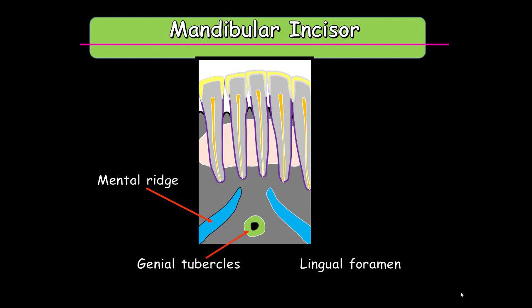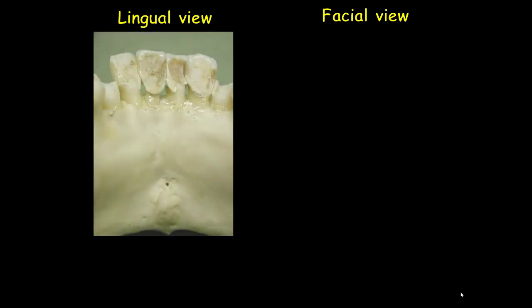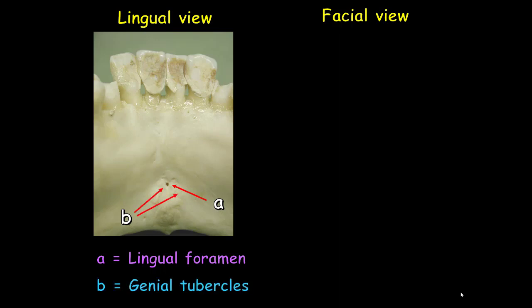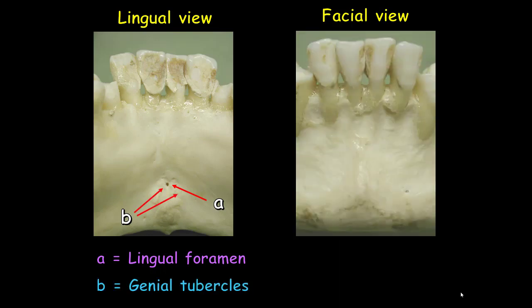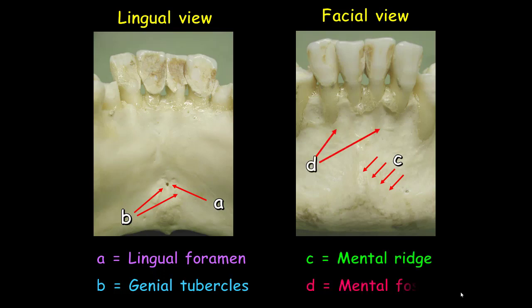Let's see each part on the mandibular bone. On the lingual view, A represents the lingual foramen and B represents the genial tubercle. On the facial view, you can see the labial side of the bone — C is pointing to the mental ridge and D is pointing to the mental fascia. Now let's see each landmark on the practical radiograph.